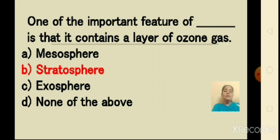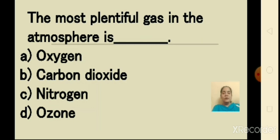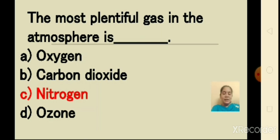The third question: the most plentiful gas in the atmosphere is — A) oxygen, B) carbon dioxide, C) nitrogen, or D) ozone? The answer is nitrogen. The most plentiful gas in the atmosphere is nitrogen.